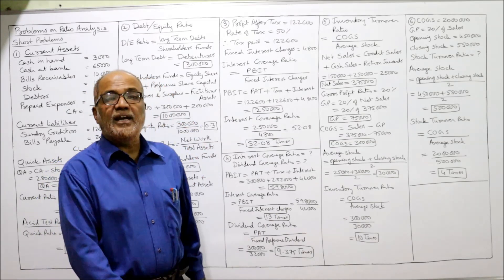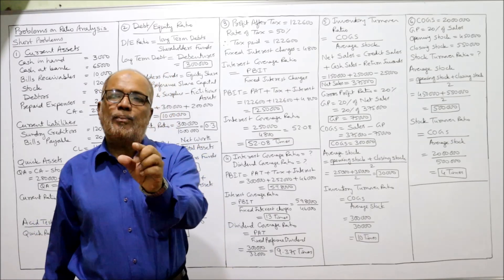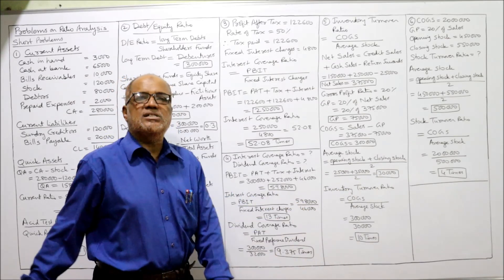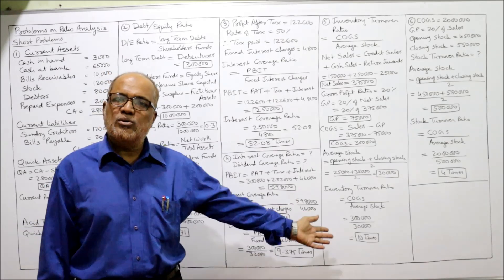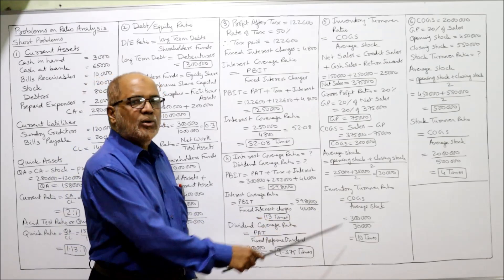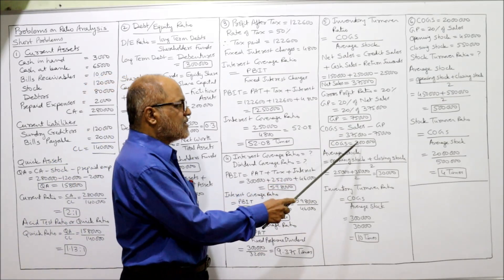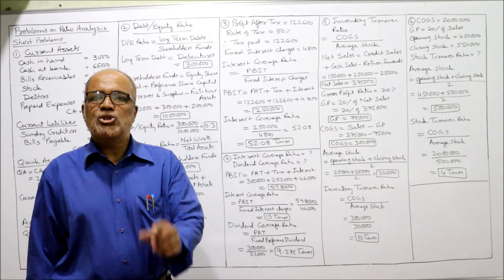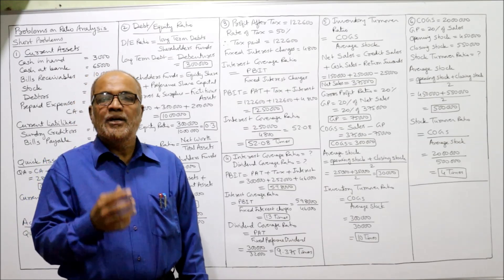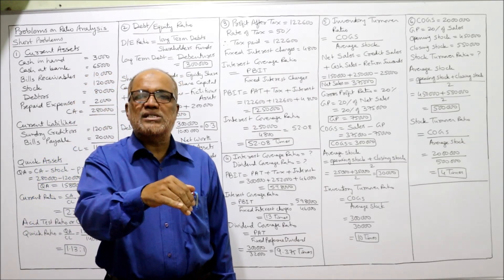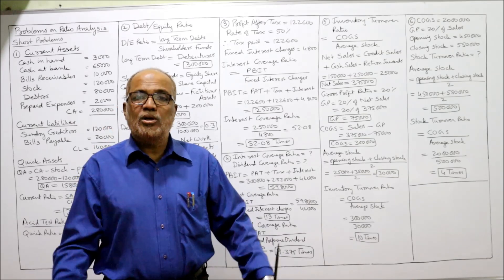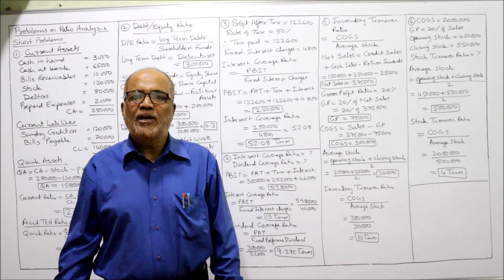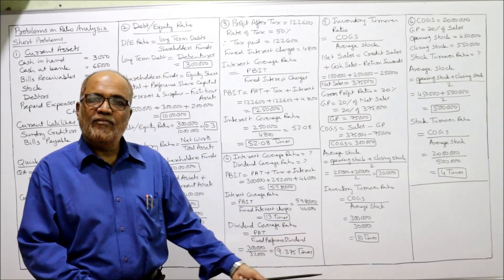Average stock equals opening stock plus closing stock divided by 2: 25,000 plus 35,000 divided by 2 equals 30,000. Inventory turnover ratio: COGS divided by average stock equals 3,00,000 divided by 30,000 equals 10 times. The stock is converted into sales 10 times in a year — a very good turnover. If it is 6 or more, it is considered good.